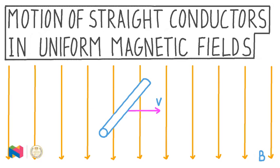In this video, our topic is the motion of straight conductors in uniform magnetic fields. We're going to discover that in situations like this, where a straight conductor is in constant motion through a uniform magnetic field, an EMF — an electromotive force — can be established across the conductor.